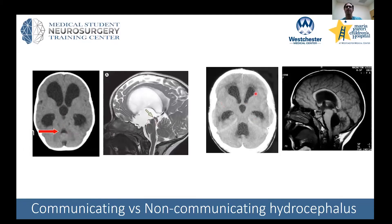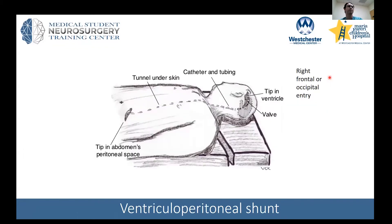In communicating hydrocephalus, everything is enlarged because there's no focal obstruction. The problem is really at the end of the pathway — the CSF is not getting absorbed, or too much is being produced. This distinction is important in guiding treatment.